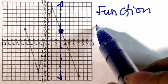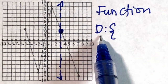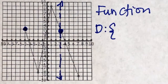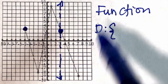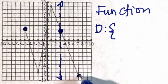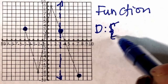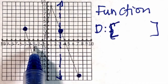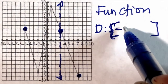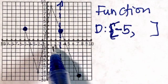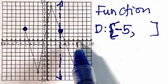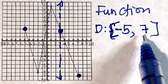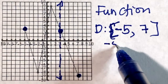How about the domain of this graph? When we say domain, this is the value of x. Looking at the endpoints, both are closed circles. The values of x start at negative 5 and go to positive 7, so the domain is from negative 5 to positive 7, inclusively.